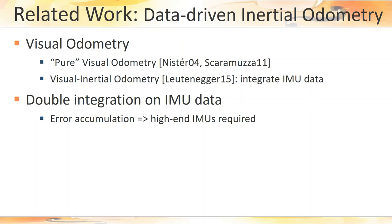In theory, one could use double integration to recover positional information from the accelerometer readings of an IMU. The problem is that this technique is not tolerant to noise and requires the use of very high-end sensors, which are extremely expensive.